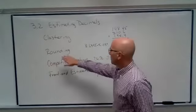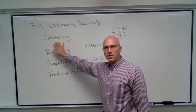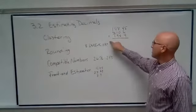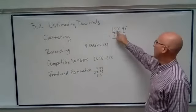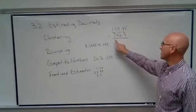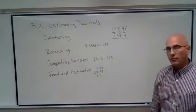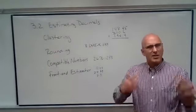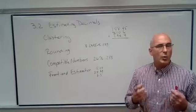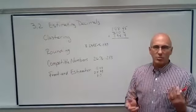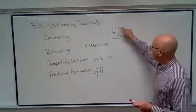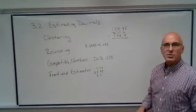So the first one that we will look at is called clustering. Say we have this addition problem: 198 and 45 hundredths plus 210 and 6 tenths plus 194 and 4 tenths. That's a lot of addition. But if we just want to find an estimate, we can see that they cluster all around a really easy number. We can see that all of these numbers are really close to 200.